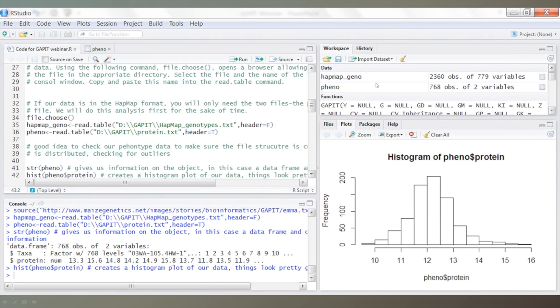And then finally, again, you can see up here, here are the actual data files, and then here's a GAPIT function that's been imported in the workspace.